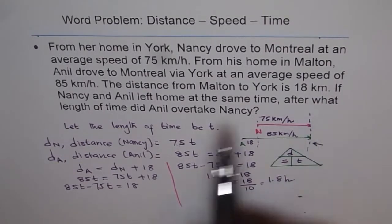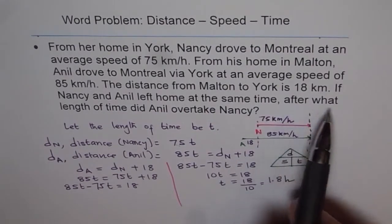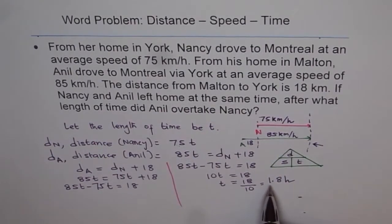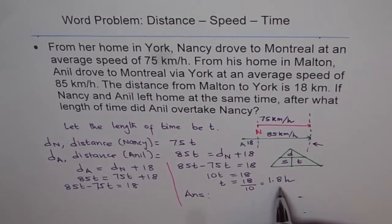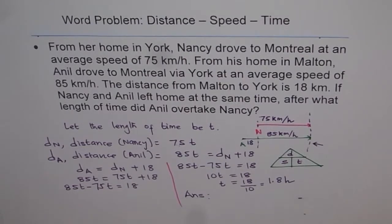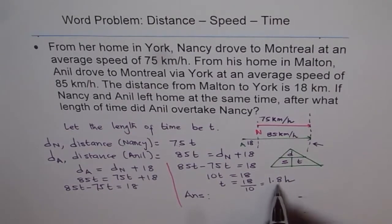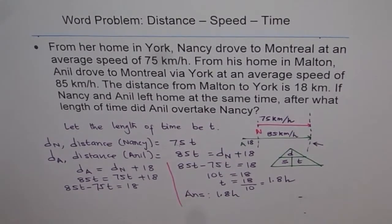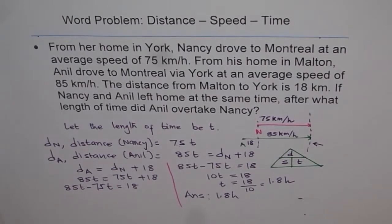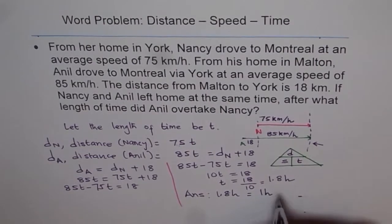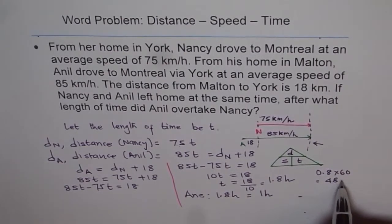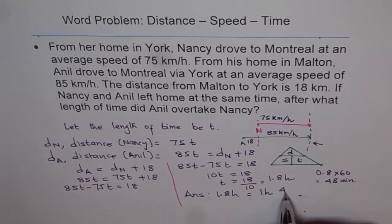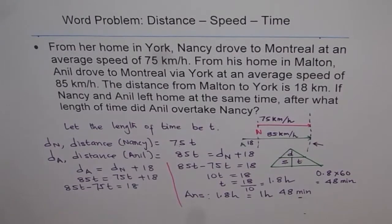So the answer to the question — after what length of time did Anil overtake Nancy — is 1.8 hours. It is a good idea to write time in terms of hours and minutes. We can convert: 0.8 times 60 gives us the minutes. So 1.8 hours is 1 hour and 48 minutes. That is the length of time taken by Anil to overtake Nancy.